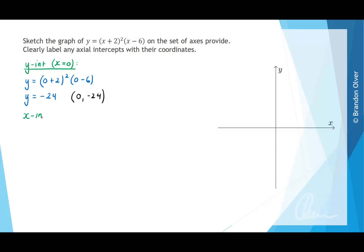Next we can find the x-intercepts of the graph, and that occurs when y equals 0. So we want to solve the equation 0 = (x+2)²(x-6). According to the null factor law, x+2 could equal 0, or we could have x-6 equals 0.